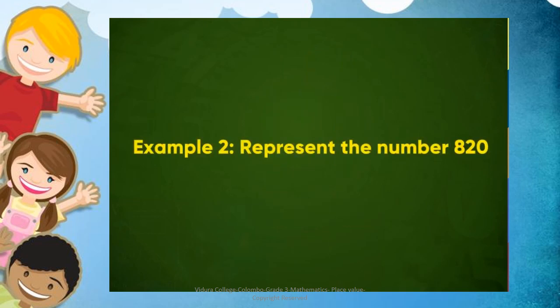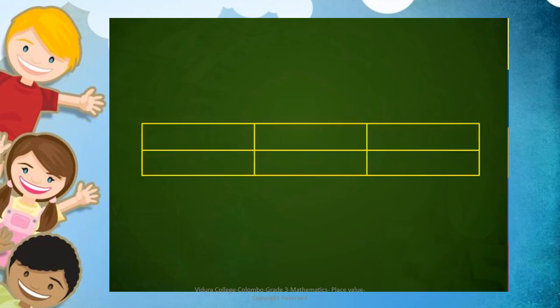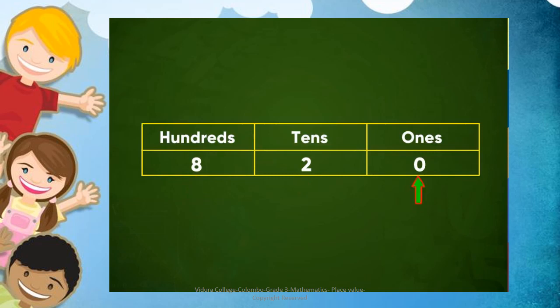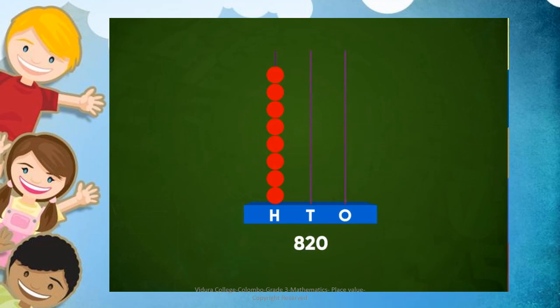Example 2: represent the number 820. We know that this number has 8 hundreds, 2 tens and 0 units. So we put 8 beads in the hundreds spike, 2 beads in the tens spike, and there are 0 beads in the units spike, so we don't put any beads there. Thus the number 820 is represented on the abacus.